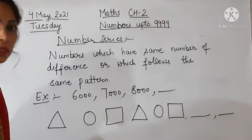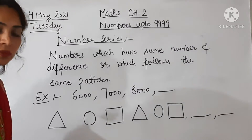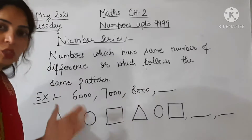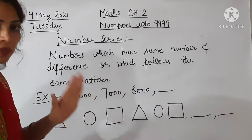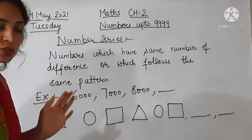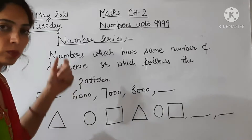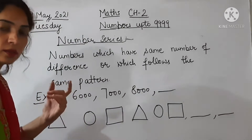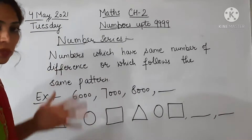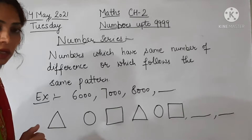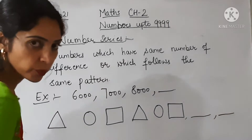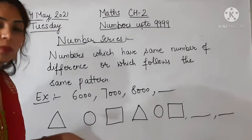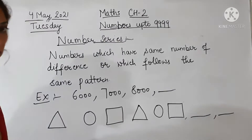Number series, ascending order, descending order, greatest number, smallest numbers — these are all topics from our previous chapter, chapter number one. We have already covered all these topics there.